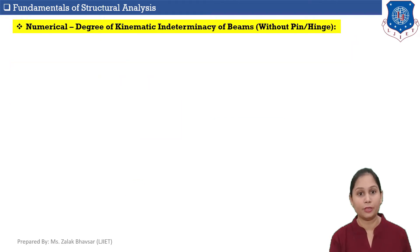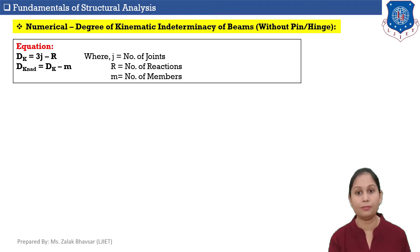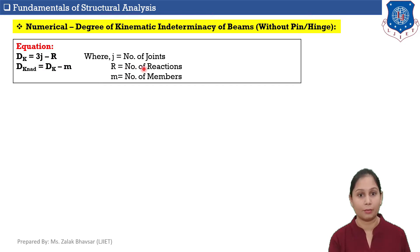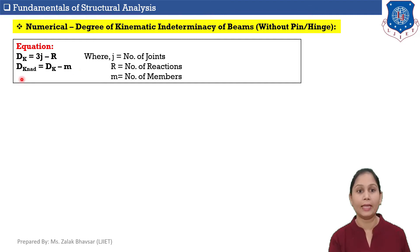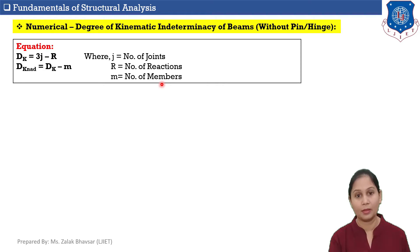Now let us follow a numerical to calculate degree of kinematic indeterminacy of a beam without pin or hinge. The equation to calculate DK of the beam is: DK equals 3J minus R, where J is number of joints and R is number of reactions. Degree of kinematic indeterminacy neglecting axial deformation is called DK_NAD. For beams without pin, DK_NAD equals DK minus M, where M is number of members.